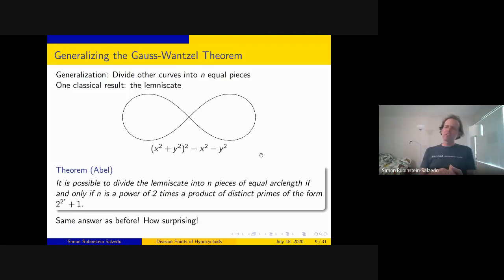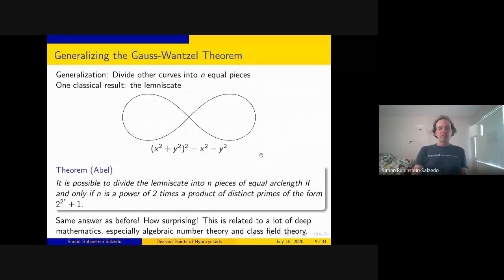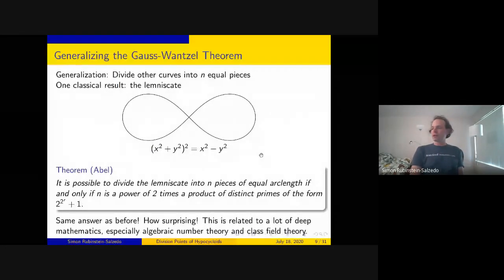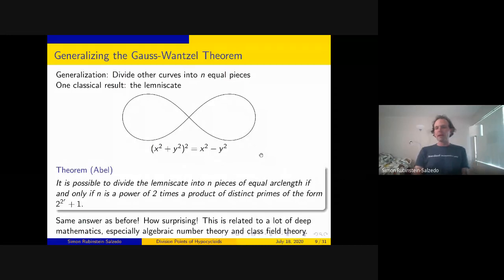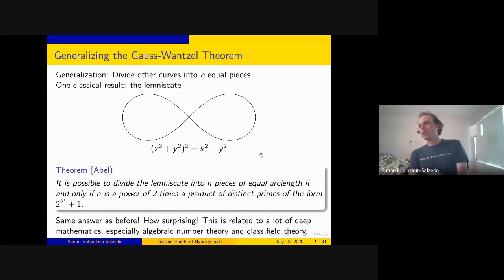This should seem very surprising—why should these completely different curves have the same answer? There's a very deep reason relating to algebraic number theory and class field theory. For those who've seen it: division points of the circle relate to abelian extensions of ℚ, whereas division points of the lemniscate relate to abelian extensions of ℚ(i). This theorem of Abel is much less well-known than Gauss-Wantzel, but it inspired us to look at what we could do with other curves.